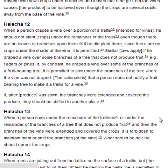Halakha 13. When a person sows under the remainder of the trellises or under the remainder of the branches of a tree that does not produce fruit, and then the branches of the vine were extended and covered the crops, it is forbidden to maintain them or shift the branches of the vine. What should he do? He should uproot the crops.